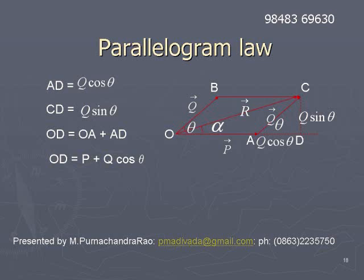Now OD is equal to OA plus AD. Since OA is p (the magnitude of p-bar) and AD is q·cos(theta), OD becomes equal to P + Q·cos(theta), and CD is Q·sin(theta). Now let us take the right-angle triangle OCD. In this right-angle triangle, OC² = OD² + CD².